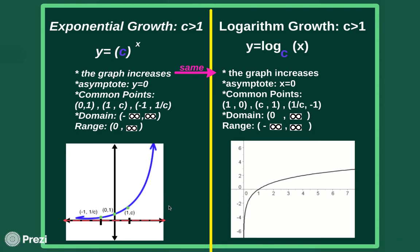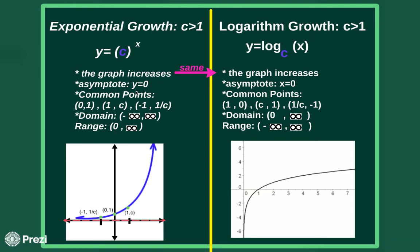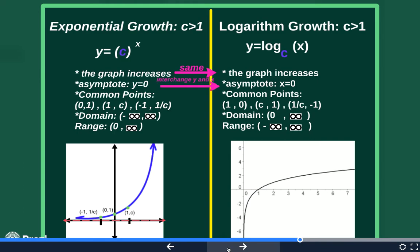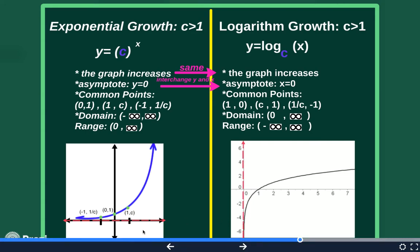Since these are inverses, remember that with inverse functions your x and y values are constantly interchanging. So if you have a y, your y becomes an x, or your x becomes a y. For exponentials, the asymptote was y equals zero. But since our x and y interchange, when we go to the asymptote of the logarithm graph, it is now x equals zero. An x equals zero is the equation of the y-axis, so our asymptote is now on the y-axis.